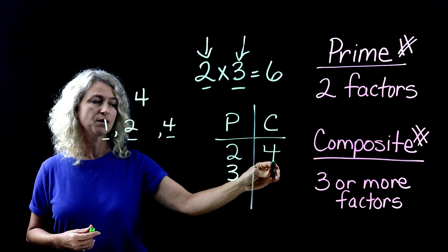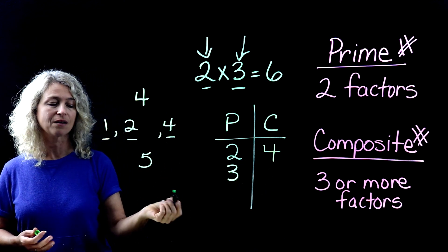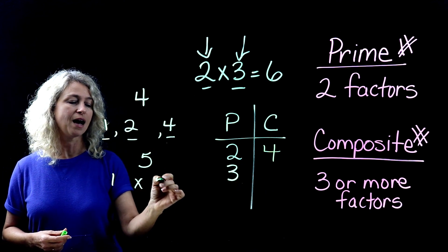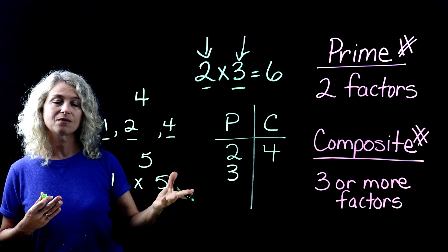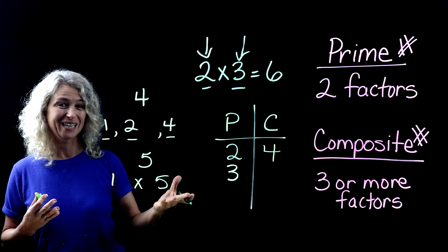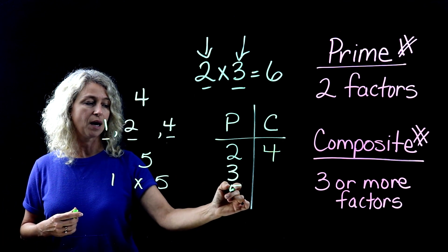So we would put four over here. Let's look at the number five. One times five. Is there any other way to get to five? No. So five is a prime number.